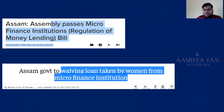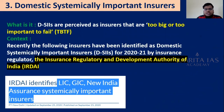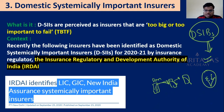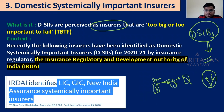The third topic is Domestic Systemically Important Insurers. Similar to Domestic Systemically Important Banks — banks so important that their failure would cause a contagion effect on other institutions — IRDA has identified three insurers that are 'too big to fail.' When an entity is designated as too big to fail, there is an obligation on it to show great financial resilience.